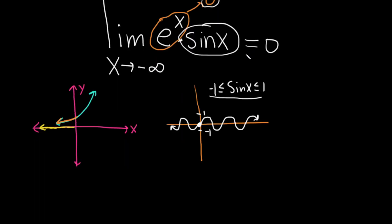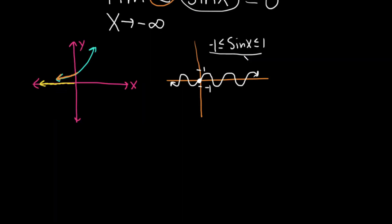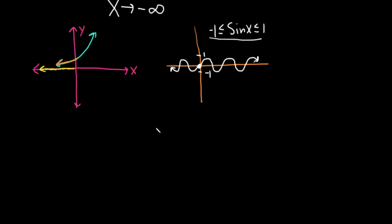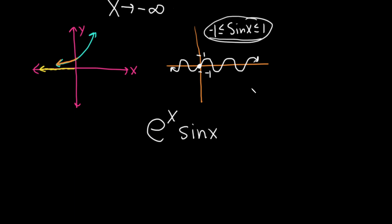We can use something called the squeeze theorem. To use it, what we do is start by writing down the function in our limit and create an inequality — we have to squeeze it between two other functions. We know that sine of x is less than or equal to 1, so e to the x times sine x is less than or equal to e to the x times 1, which is just e to the x.